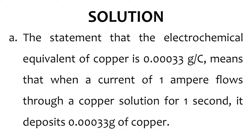Solution. For Part A: The statement that the electrochemical equivalent of copper is 0.00033 grams per coulomb means that when a current of 1 ampere flows through a copper solution for one second, it deposits 0.00033 grams of copper.